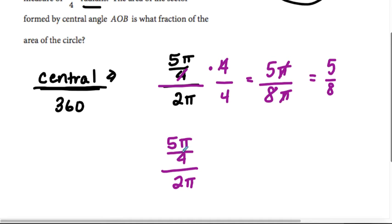Your teacher might have taught you a trick that we keep the numerator, so 5π/4, we change from division, because the fraction bar is division, to multiplication, and we flip the denominator, so that would become 1 over 2π.